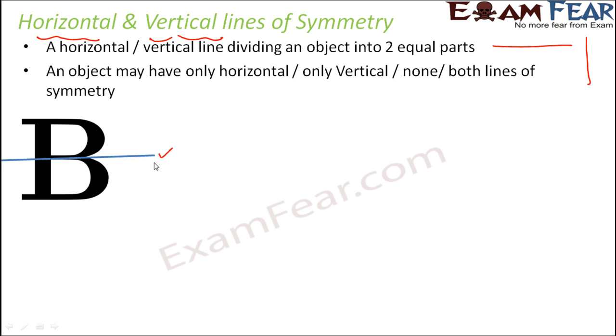Now for B, do you think that there would be a vertical line of symmetry as well? So vertical line of symmetry would be something like this. A vertical line which is passing through the center of the object which is center of B. But do you think it divides it into two equal halves? No.